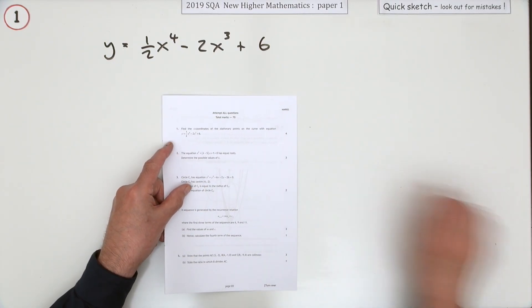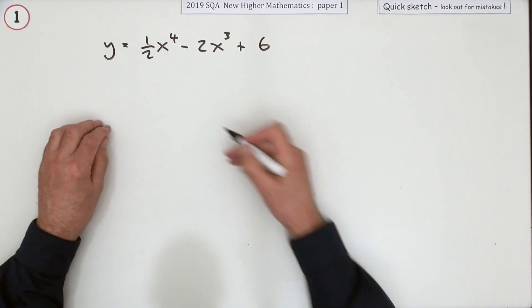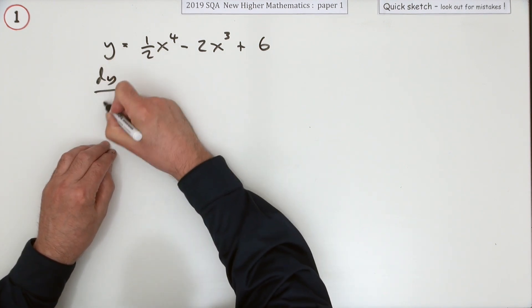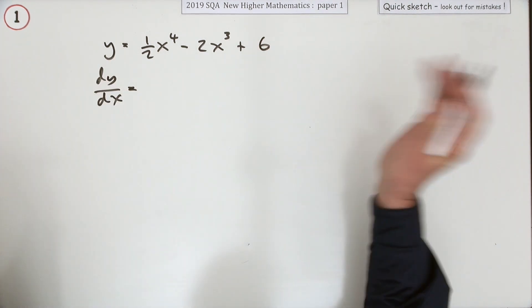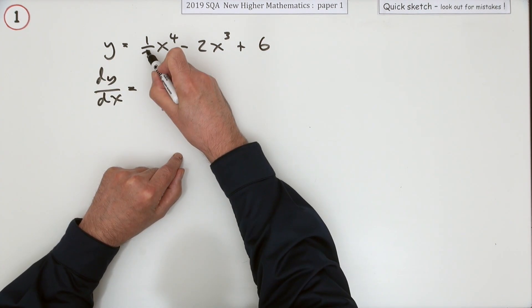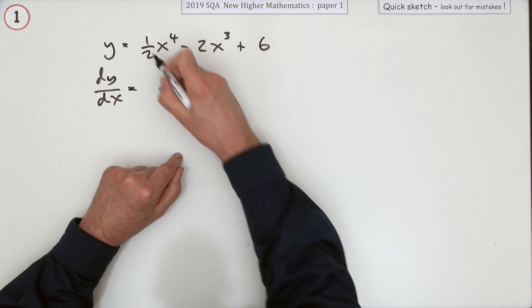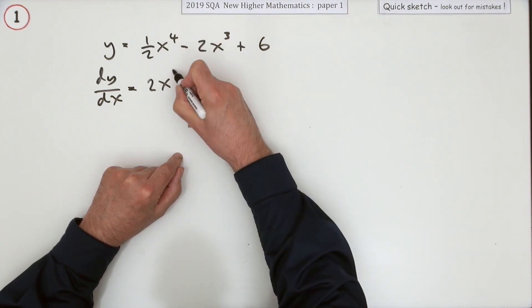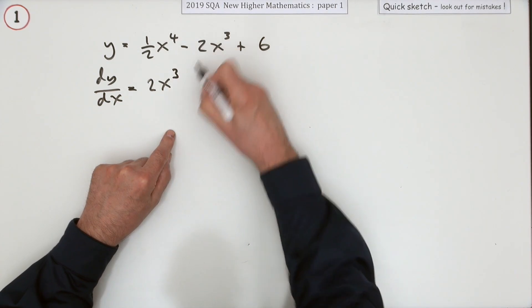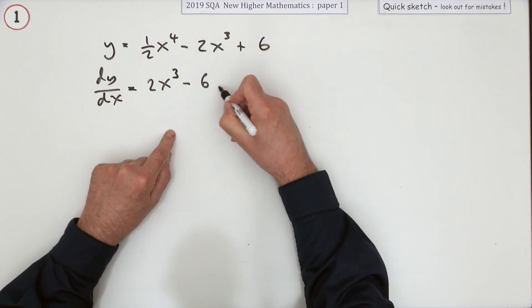Well, that should be fairly straightforward. The first thing you'll need to do is differentiate it, which will obviously be the first mark. Multiply by the power, take one off the power. Four halves, that's two. Take one off the power, drops to three. Multiply by the power, three twos are six. Take one off the power, three drops to two. This is a constant.